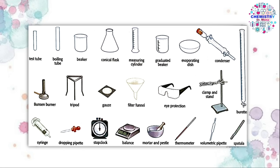A spatula looks like a spoon and can transport solid powder or solid crystals. We also have the dropper, used to take a few drops of a liquid — for example, in titration, to add a few drops of indicator into the conical flask. A syringe is used to collect and measure the volume of gas given off in a chemical reaction. We also have a filter funnel, used in filtration, and a Bunsen burner used for heating.